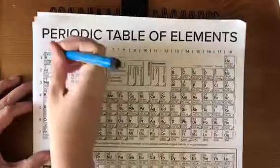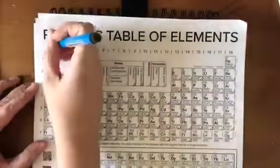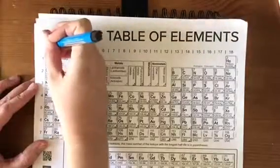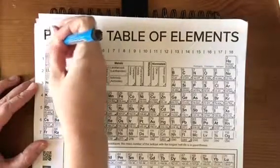What else can we look at from the table? We can also say this row is very reactive, because it only has one valence electron. Group one has one valence electron.